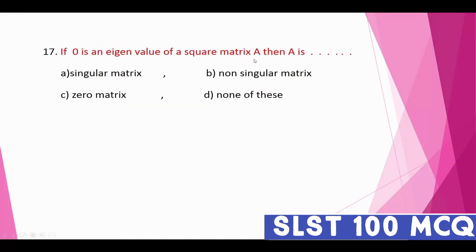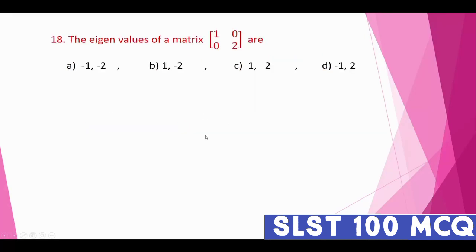Question seventeen: if zero is an eigenvalue of a square matrix A, then A is a singular matrix. Among the options — singular matrix, non-singular matrix, zero matrix, or none of these — option A, singular matrix, is correct. If zero is an eigenvalue, the matrix is singular.